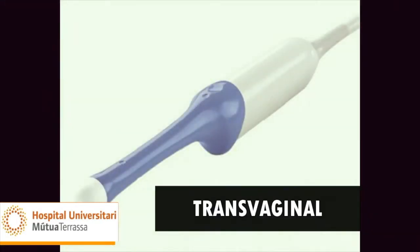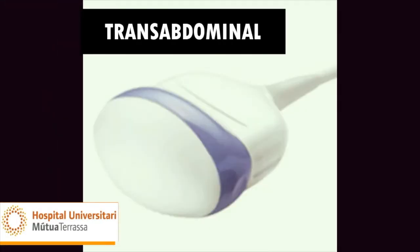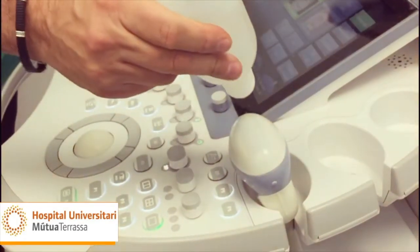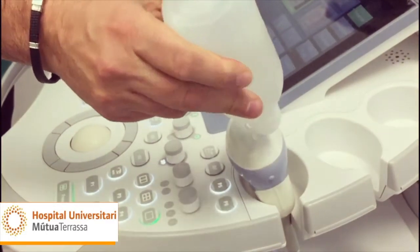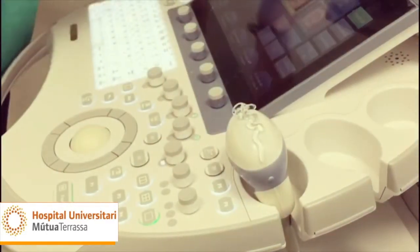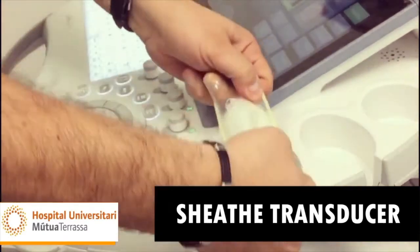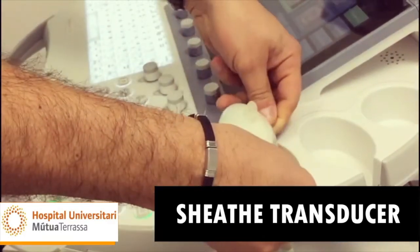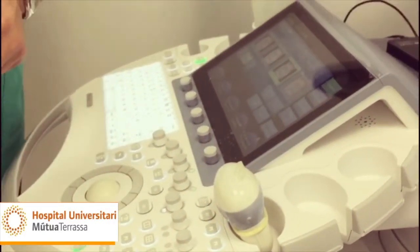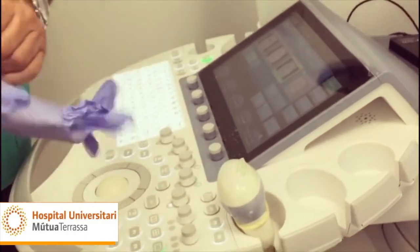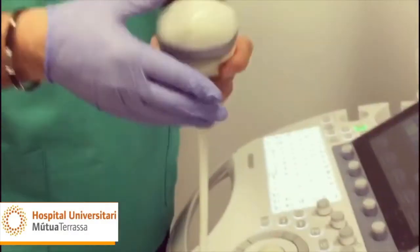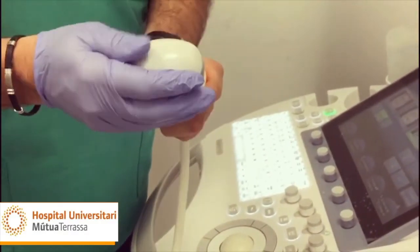The most commonly used probes are the high-frequency transvaginal probe and the abdominal probe, usually used in obstetrics but used here transpirineally. It is very important to sheathe the transducer correctly, ensuring no air remains between the transducer and the cover, as this makes assessment of the structures impossible.